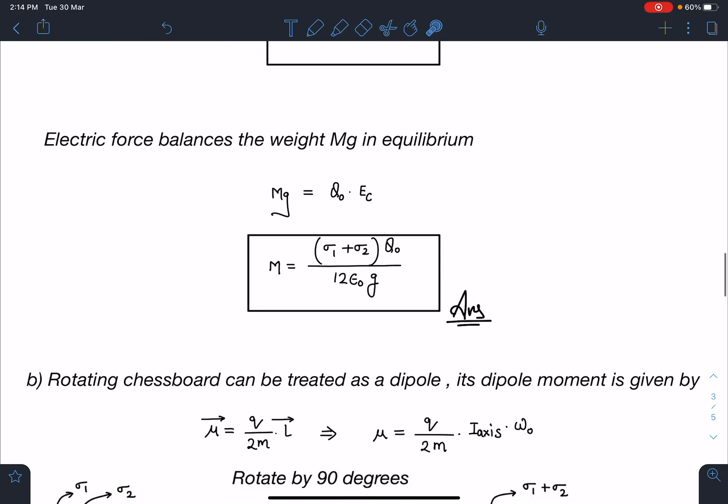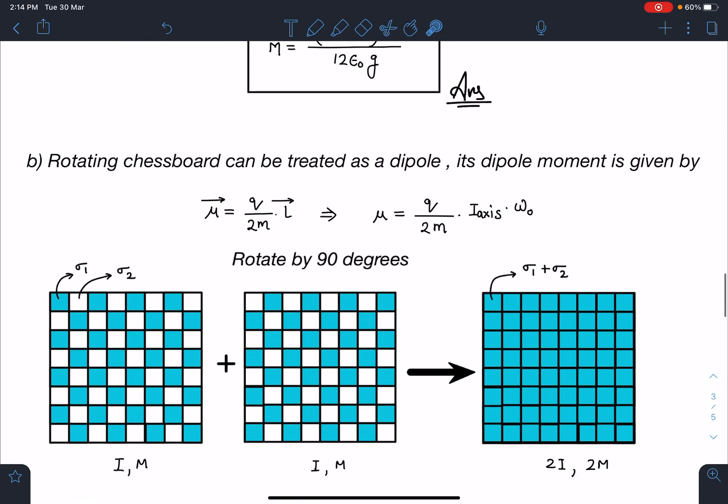Similarly, for the second part, the rotating chessboard can be treated as a dipole, and its dipole moment is given by μ = Q/(2M) times angular momentum, so I_axis times ω. Now for this single chessboard, if its moment of inertia is I and its mass is M...